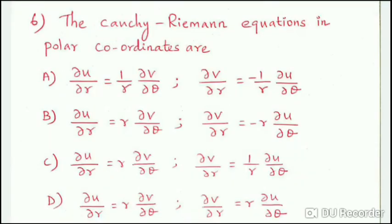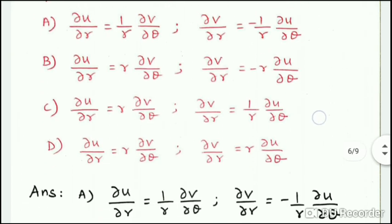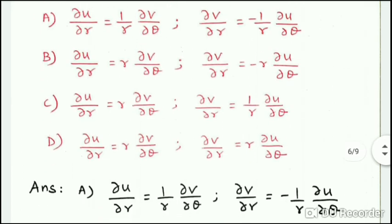Next question: the Cauchy-Riemann equations in polar coordinates. This is a standard result. If you remember it, the C-R equations in polar form are: ∂u/∂r = (1/r)(∂v/∂θ), and ∂v/∂r = -(1/r)(∂u/∂θ). Option A: that is the answer.